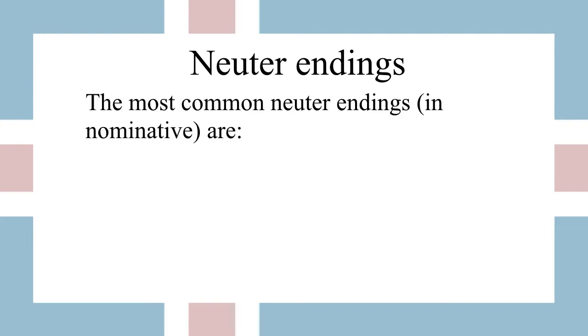Now the tricky thing about neuter nouns is they're hard to identify because they don't have a set ending. A neuter noun in nominative can end in virtually any consonant or vowel. So the most common ending is there is no ending, and that makes them hard to identify. Really the only way to go about it is to recognize that maybe it's not a masculine or a feminine noun, and then also just to learn each word at a time. There is however a certain subclass of neuter nouns that often end in an A — we'll go over those — but there are very few of them. So in general, a neuter word can end in just about any letter, but at least the pattern is very simple and straightforward.